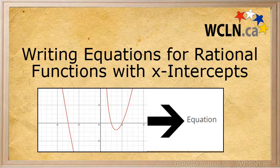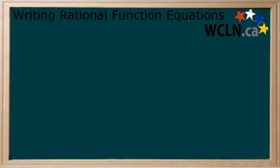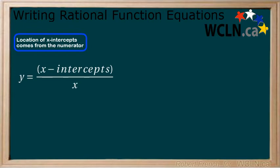In this tutorial, we will be learning how to write a possible rational equation from x-intercepts. When writing an equation of a rational function, the location of the x-intercepts are found in the numerator.